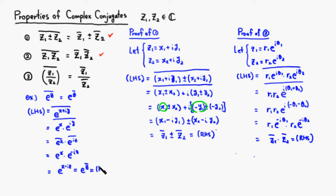That verifies the fact: if you take the conjugate of e^z, all you have to do is negate the exponent to get e^(z-bar). I hope that was clear.